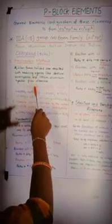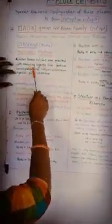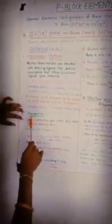Let us discuss about diborane preparations. There are two types of preparation methods. In the first method, when boron halides are reacted with reducing agents like sodium borohydride and lithium aluminium hydride, diborane is formed. In the second method, diborane can be prepared by the action of dilute sulfuric acid on borohydride.